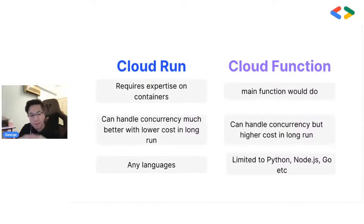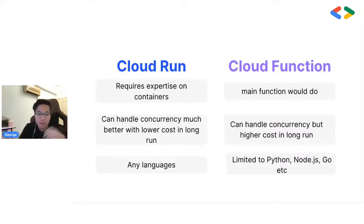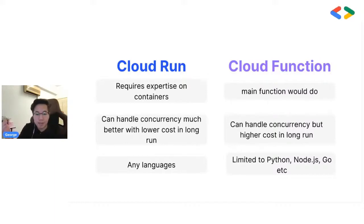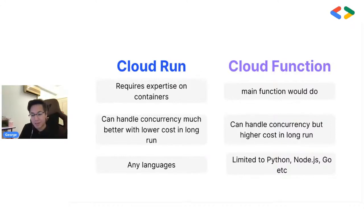Let's compare Cloud Run and Cloud Function. To run Cloud Run, it requires expertise in building and operating containers, whereas for Cloud Function you mainly just need your code — for Python, you just write your main function. In terms of handling concurrency, both can handle it, but Cloud Run handles it much better with lower cost in the long run. Since Cloud Run runs on containers, you can build it with any language. But Cloud Function is limited to Python, JavaScript, Go, and a few others.